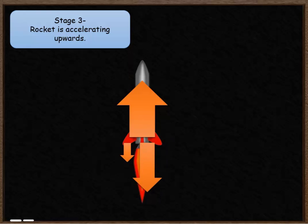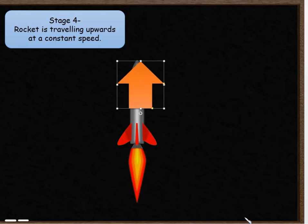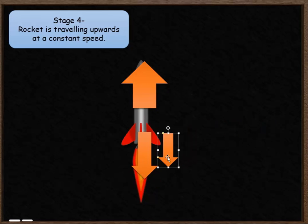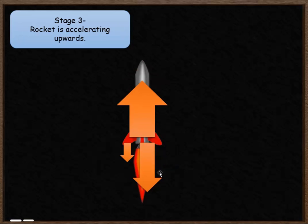So our next stage is our rocket then starts to travel at constant speed. So we still have that upwards force there. We still have our downwards force of gravity and we still have air resistance. Note that air resistance is now bigger than it was before. This is the size of air resistance before, quite small.